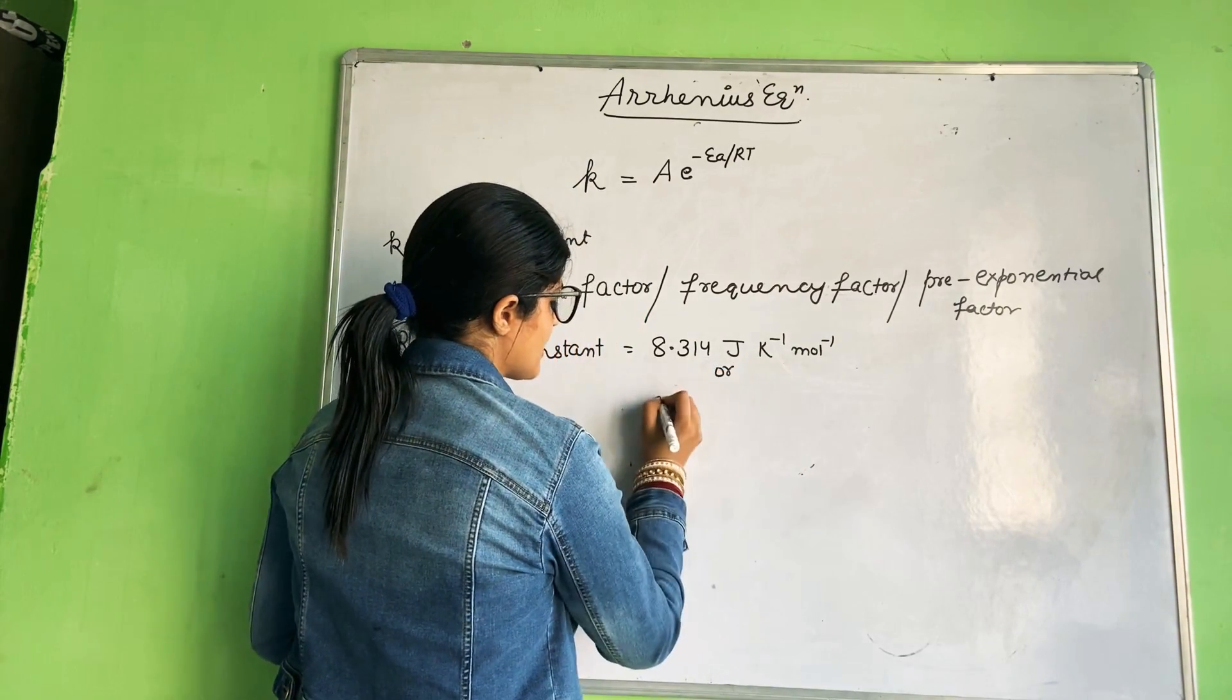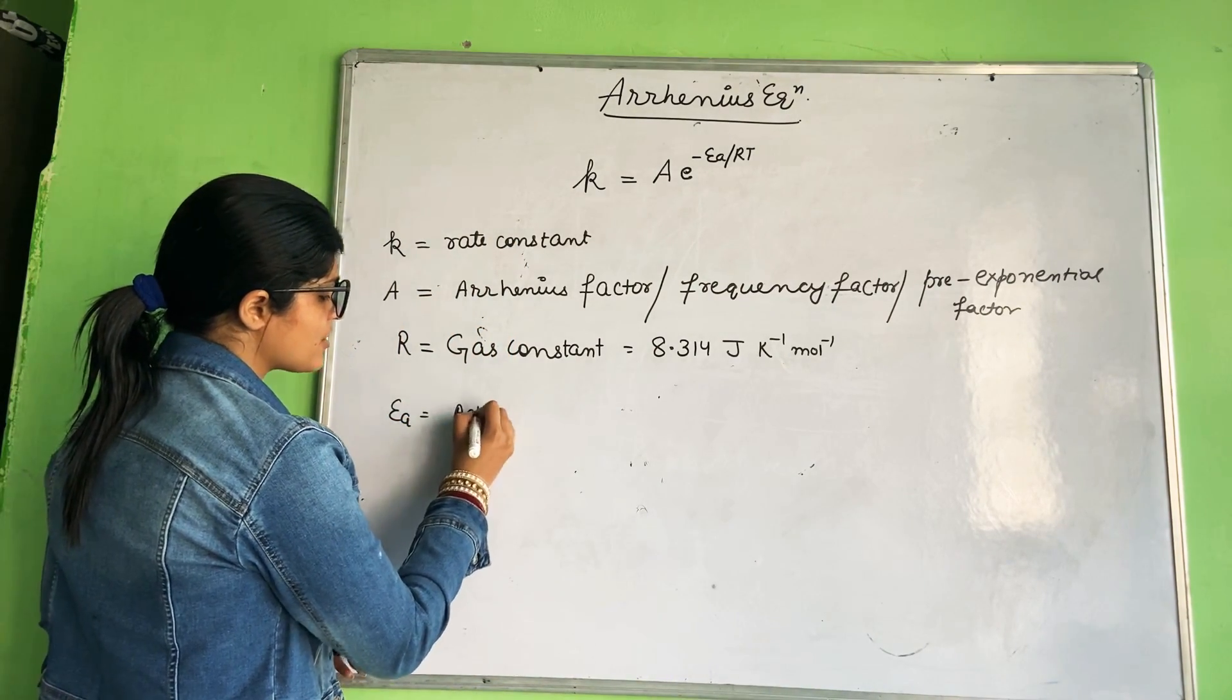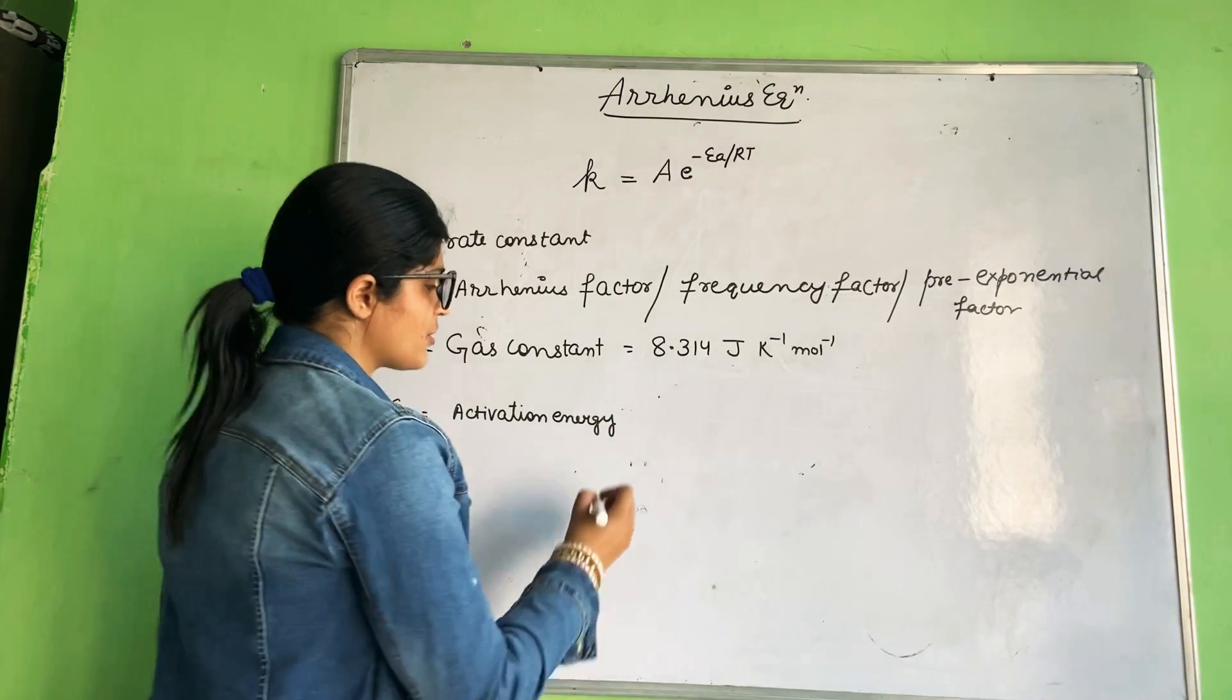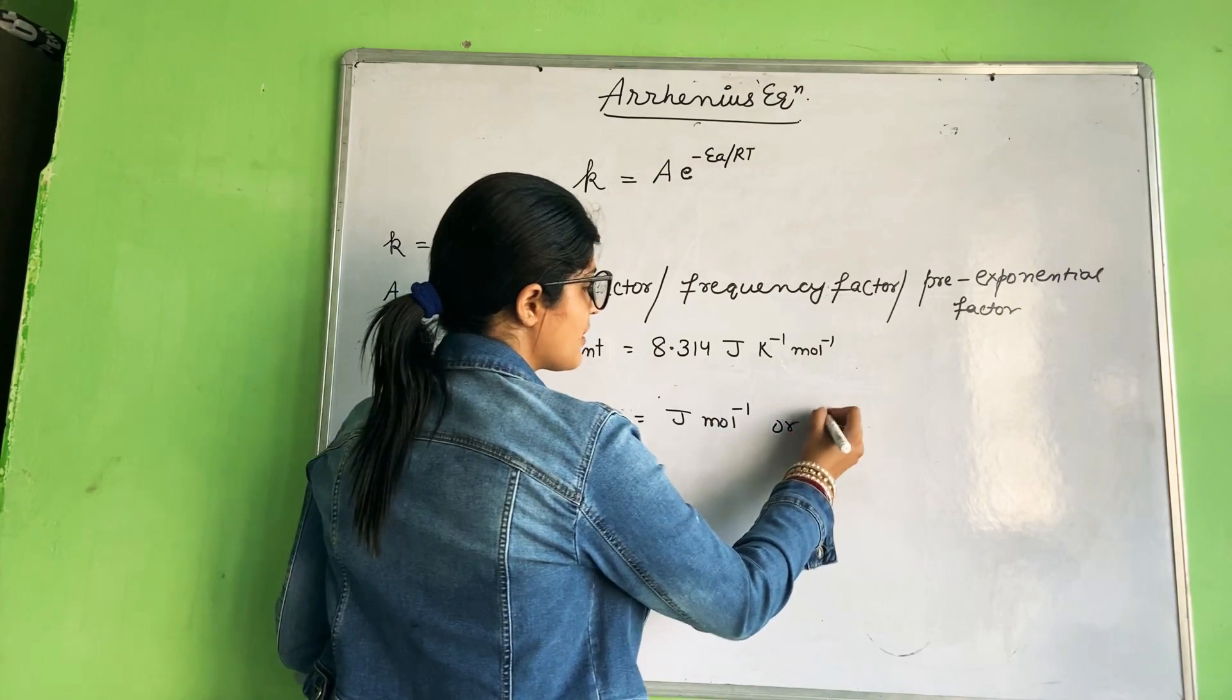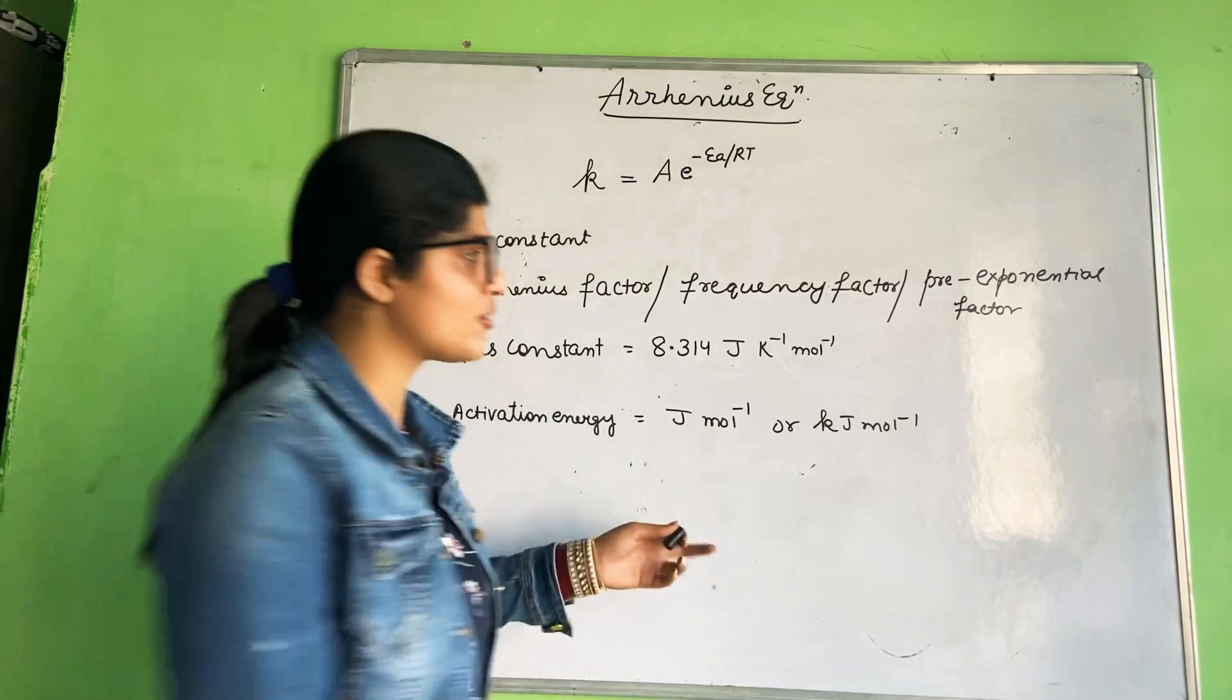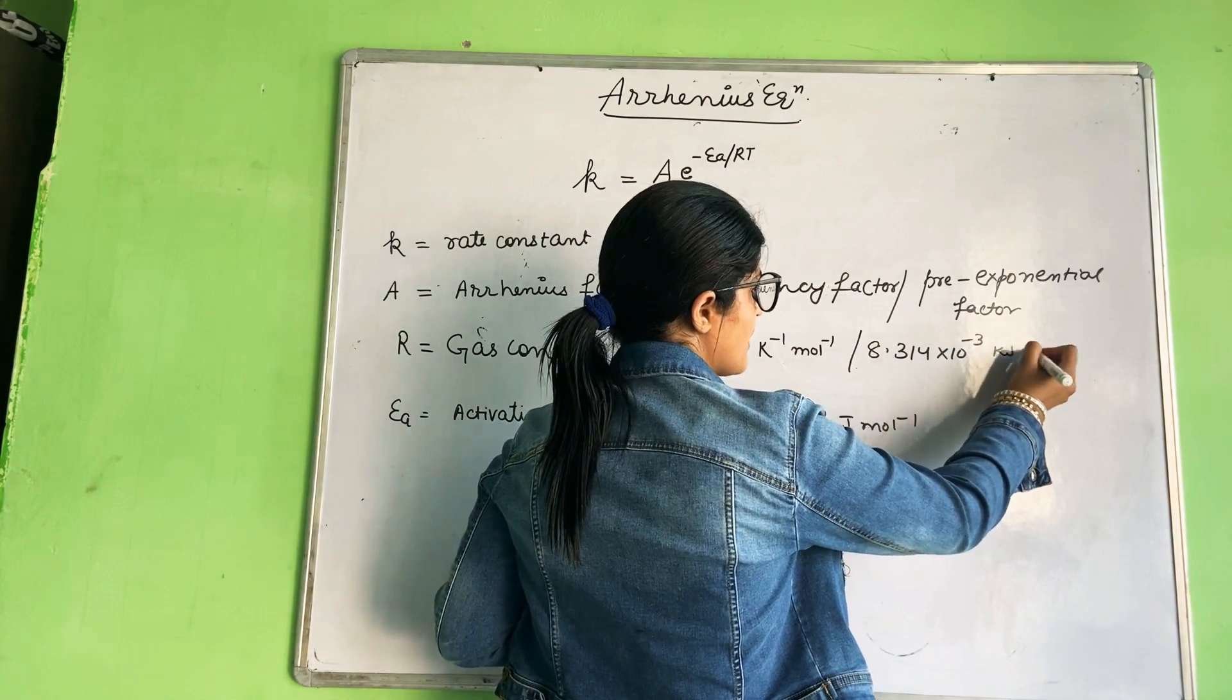Ea is the activation energy, either joule per mole or kilojoule per mole. There are two ways: either here R's unit is kilojoule per mole, or divide by thousand, which means 10 raised to minus 3 per Kelvin per mole.